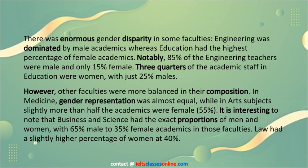However, other faculties were more balanced in their composition. In medicine, gender representation was almost equal, while in art subjects slightly more than half the academics were female. It is interesting to note that business and science had the exact proportions of men and women, with 65% male to 35% female academics in those faculties.